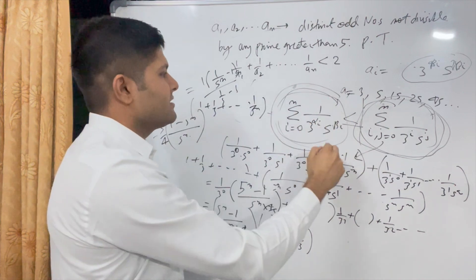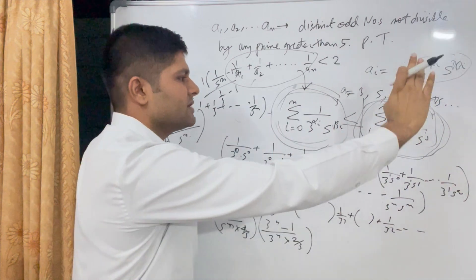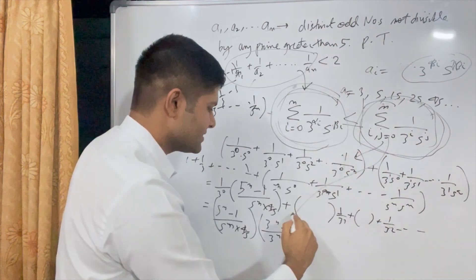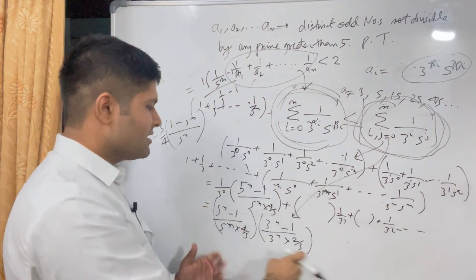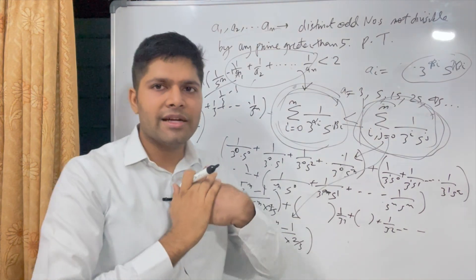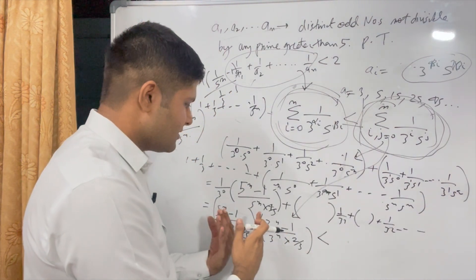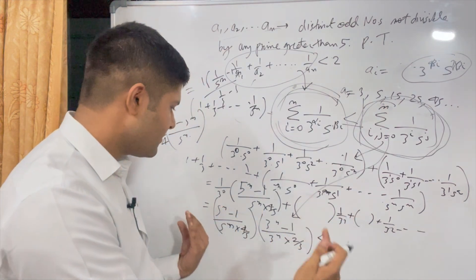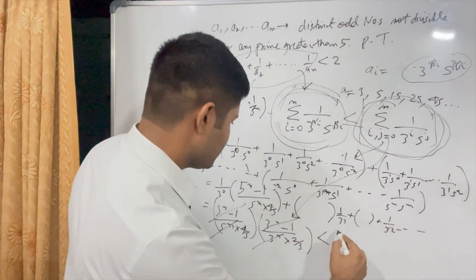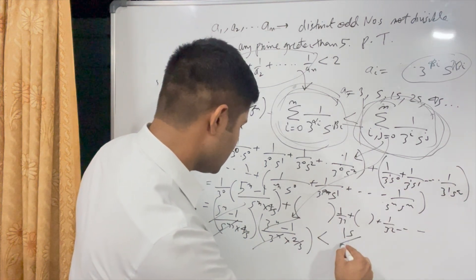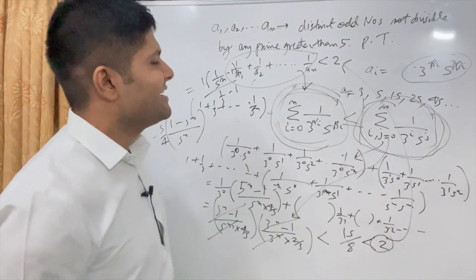So the full summation of all such reciprocals equals that product expression. This summation will always be less than the maximum value achieved when n tends to infinity. Applying that limit, the (5^n − 1)/5^n → 1 and (3^n − 1)/3^n → 1, so we are left with (5/4) · (3/2) = 15/8, which is less than 2. That's the result we needed to prove.